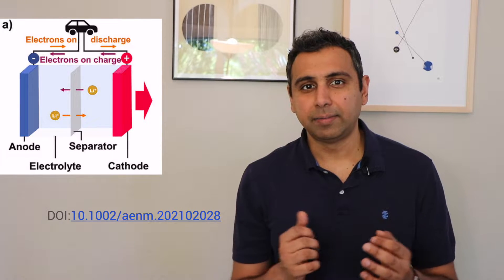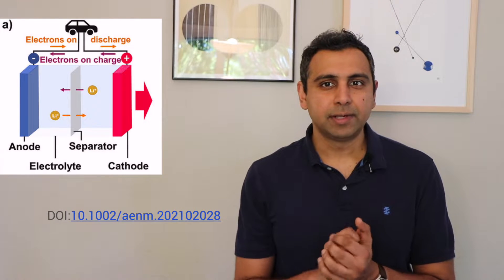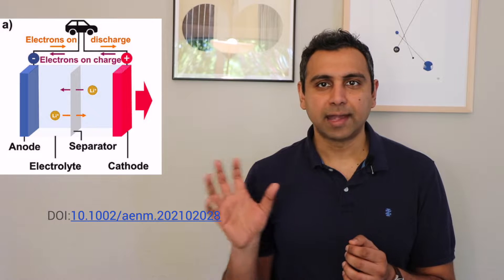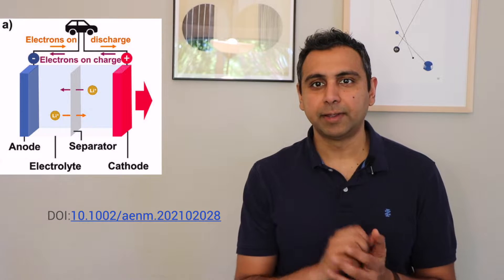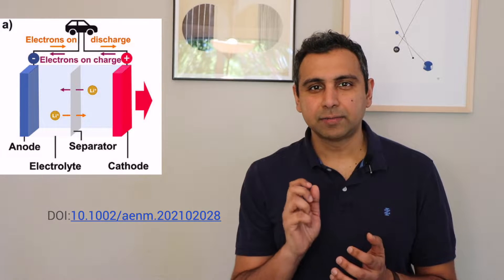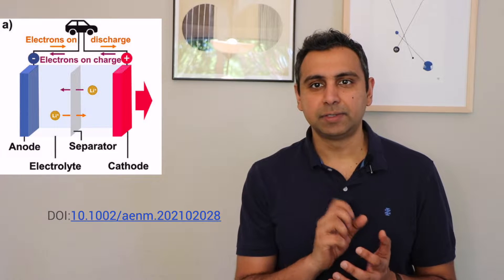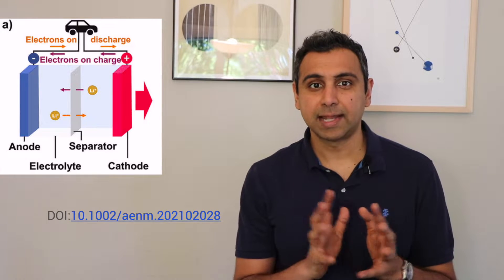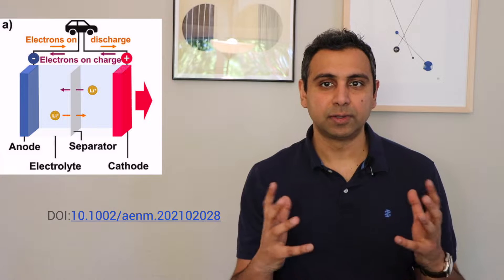For example, let's take a lithium-ion battery. A battery is made up of many different parts like the cathode, the anode, and the electrolyte. Each of these components is made up of several materials, and these materials actually determine the properties of the overall device.